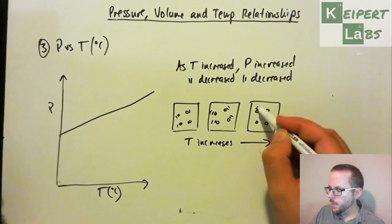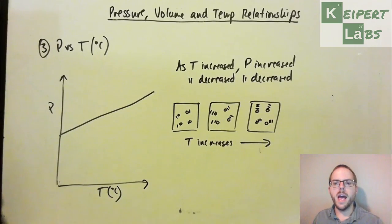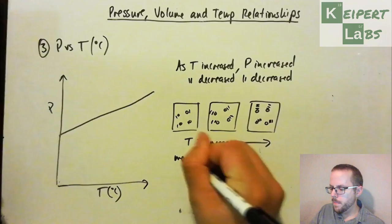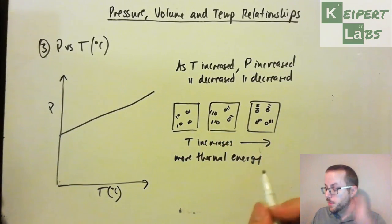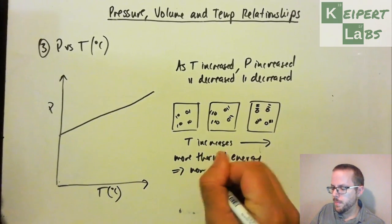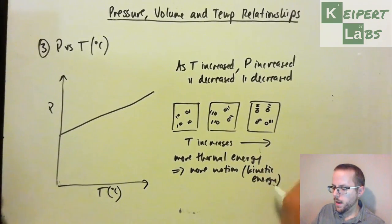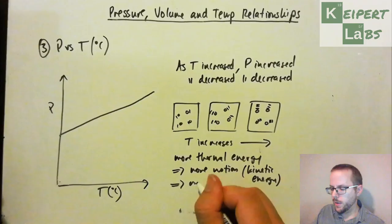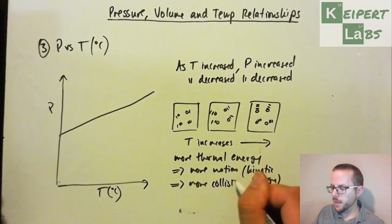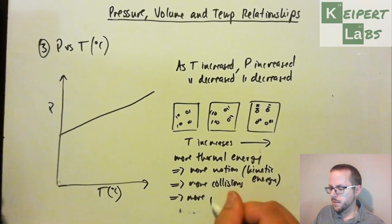And so now what we can see is that we're trying to visualize that as we're increasing the temperature, that is, more thermal energy. So as we're increasing the temperature, remember temperature is a measure of how much thermal energy is in the sample. So more thermal energy equals more motion, that is to say more kinetic energy. This leads to more collisions with the container, which therefore increases the pressure.